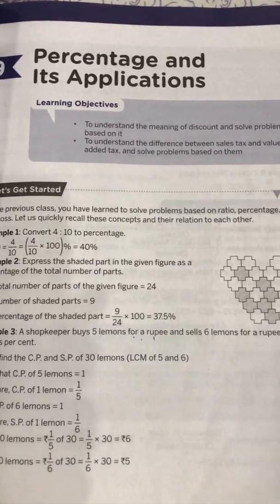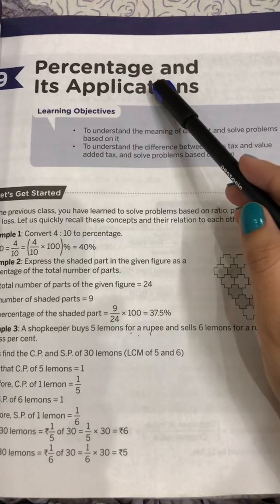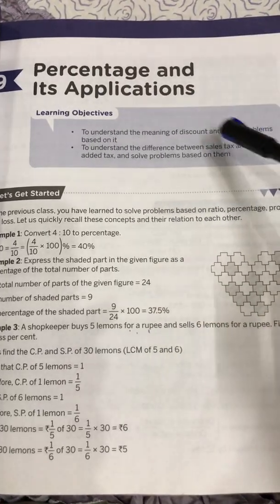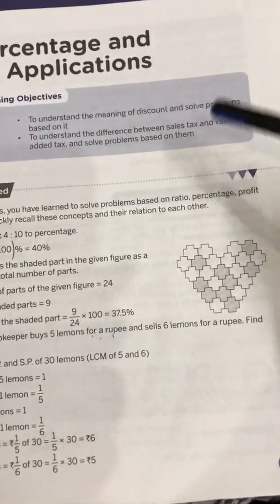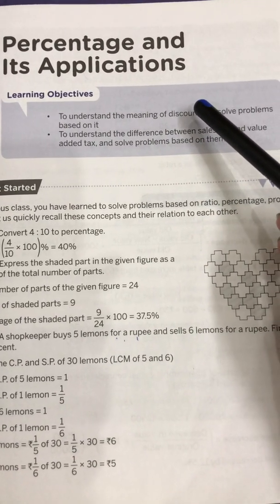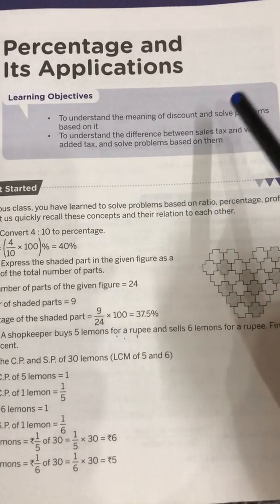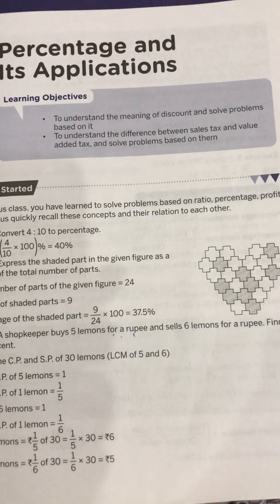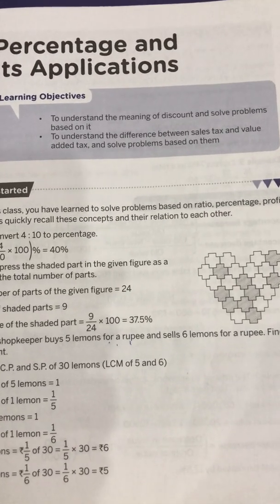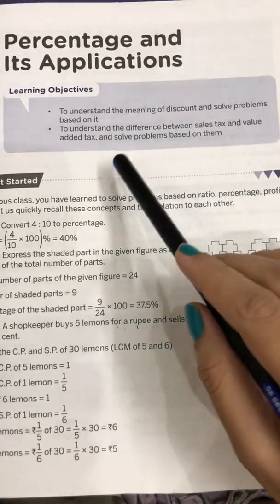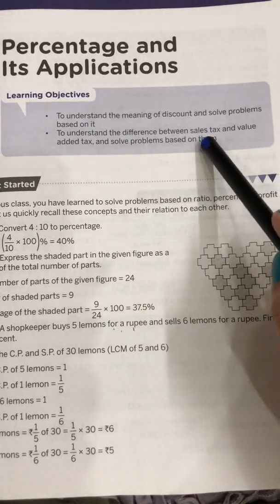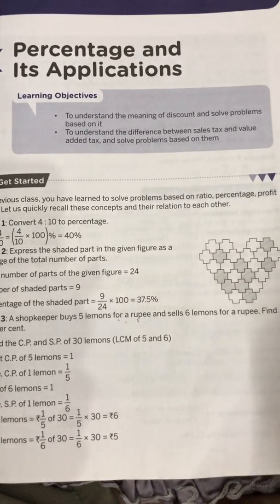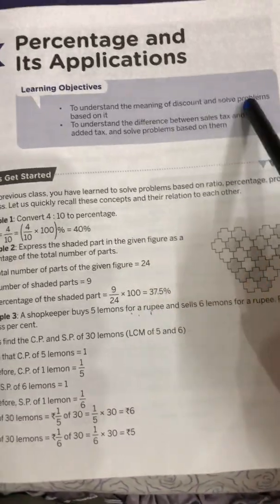Good morning everyone. Today we are going to start Chapter 9, whose name is 'Percentage and its Application.' In this chapter there are two exercises. In the first exercise we will discuss discount, how to find discount percentage, and what is the increase and decrease percentage. In the second exercise we will discuss what is sales tax, value added tax, and the difference between them. We will solve some problems based on these concepts.